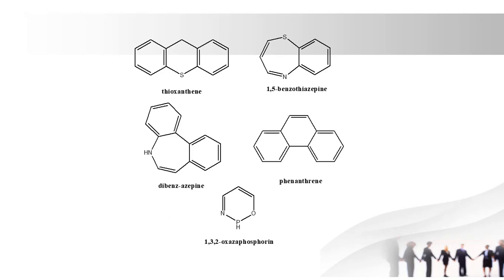The last one is 1,3,2-oxazaphosphorine. The 1,3,2 denotes the positions of phosphorus, nitrogen, and oxygen. 'Oxa' denotes oxygen, 'aza' denotes nitrogen, and 'phosphor' denotes the phosphorus group. It is a very important and unique ring. The antineoplastic drug cyclophosphamide contains the 1,3,2-oxazaphosphorine ring.